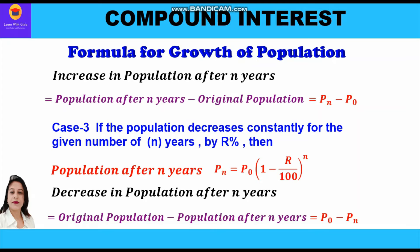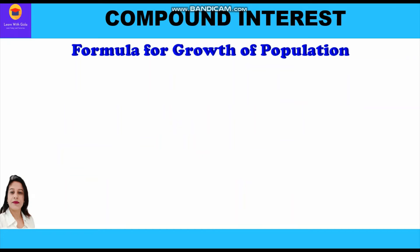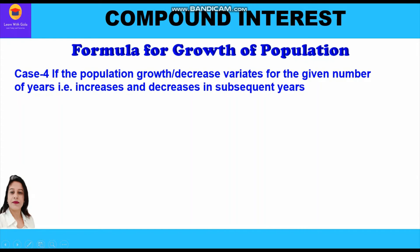If we have to find the decrease in population after n years, we shall use the formula: original population minus population after n years, that is P0 − Pn. This is exactly opposite to the increase formula, because the population after n years will be less than the original population.